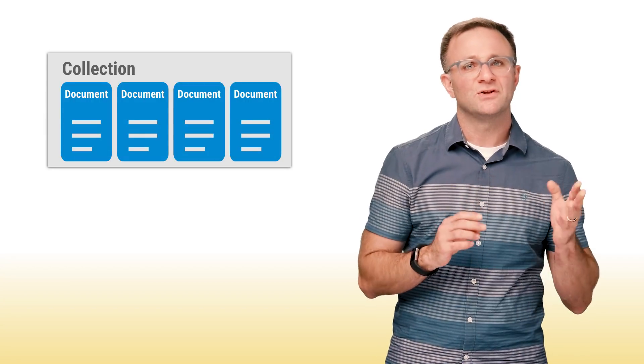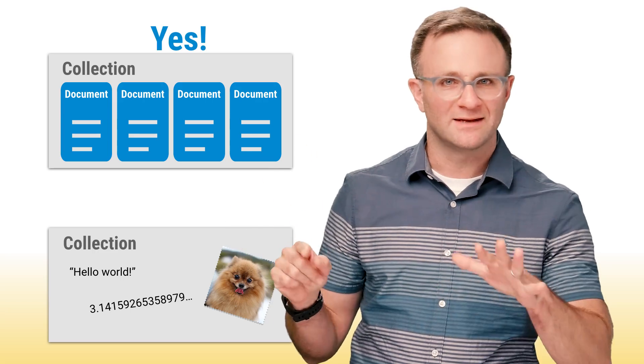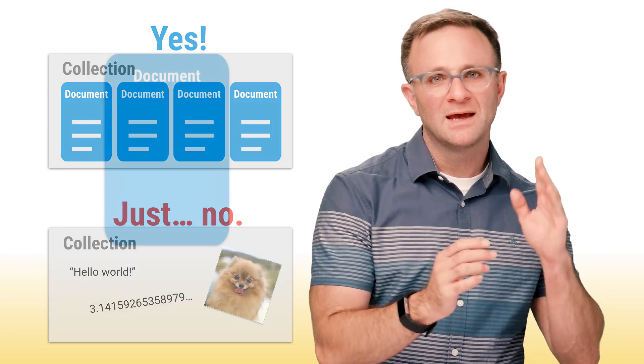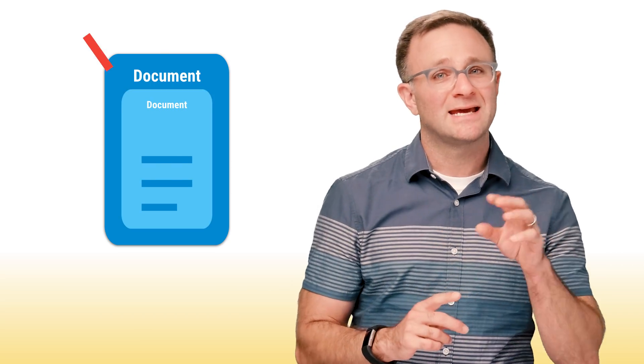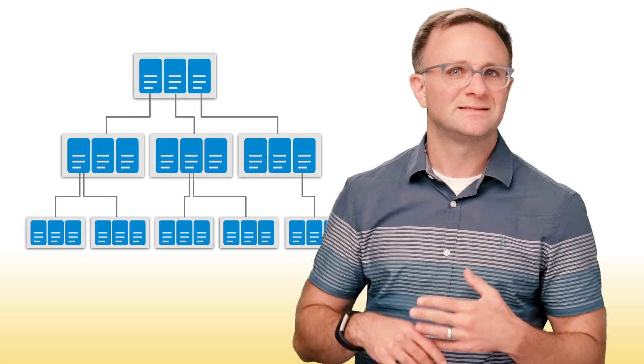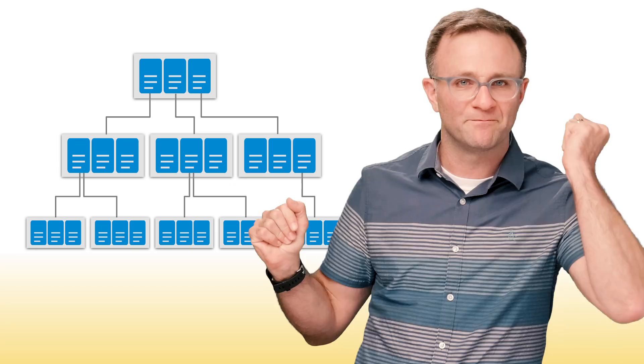So there are a few rules around the use of these things. The first is that collections can only contain documents, nothing else. No collections of strings or binary blobs or anything else here. Second is that documents can't contain other documents, but they can point to sub-collections. So it's very common to see a collection containing a bunch of documents, which then point to sub-collections that contain other documents and so on.